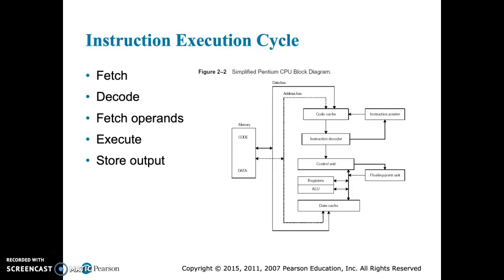One thing to keep in mind is that the CPU and the memory are two separate things. So the CPU has to go grab information from the memory in order to process it. So first, the first thing the CPU does is it fetches an instruction from memory.